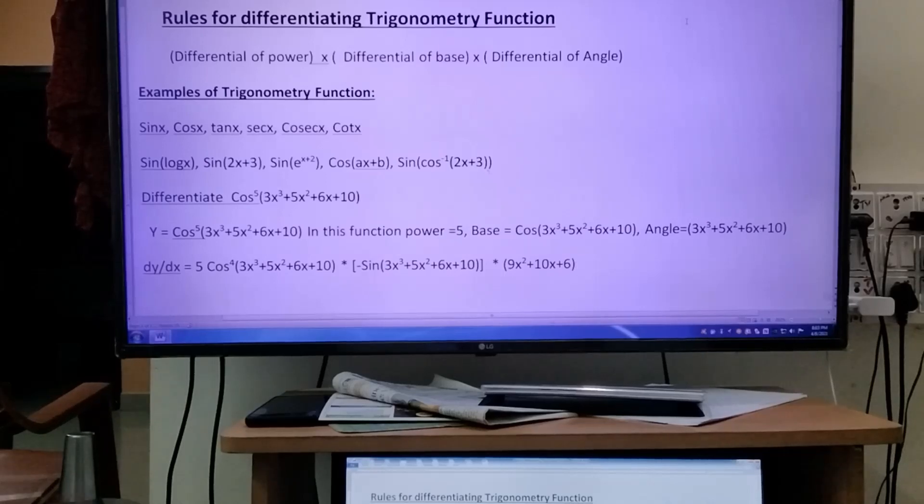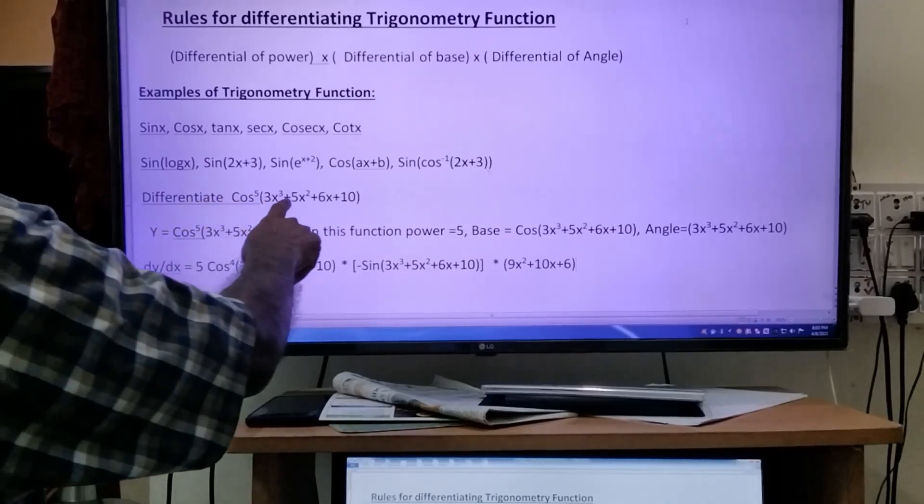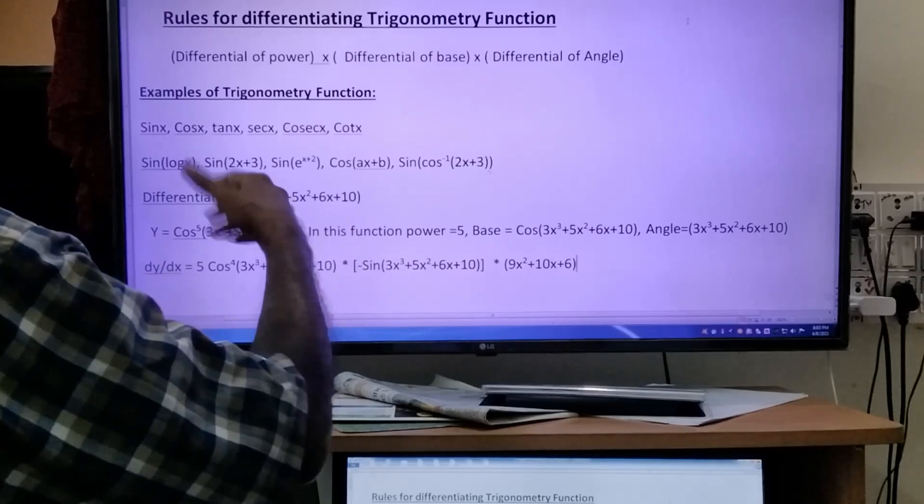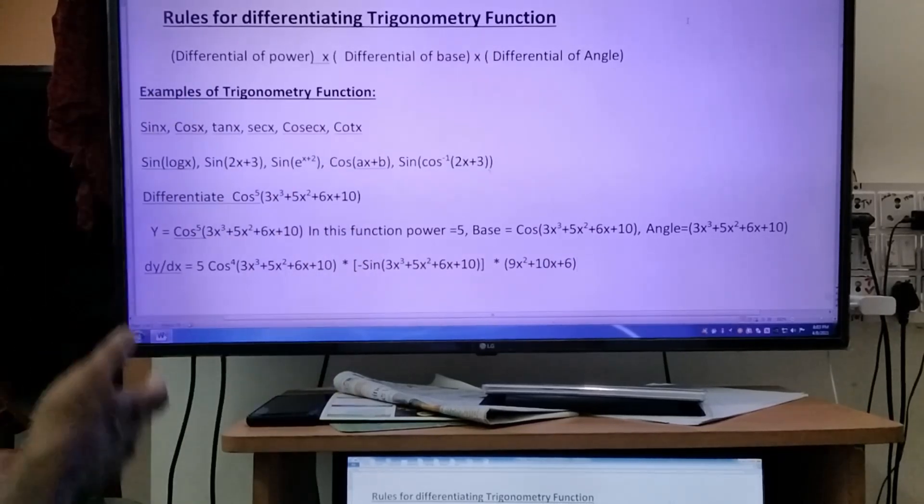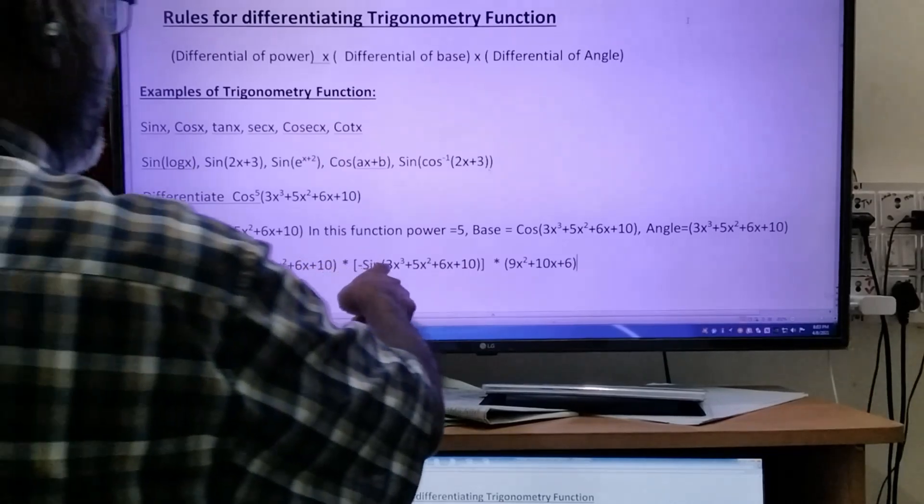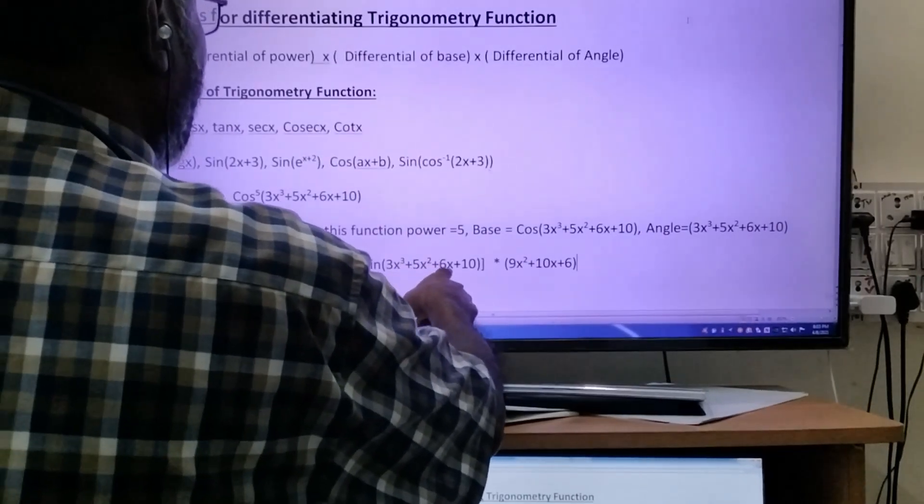What is the differential of the base? Cos(3x³ + 5x² + 6x + 10) is the base. What is the rule? The derivative of cos x is minus sin x. That's why I applied minus sin(3x³ + 5x² + 6x + 10) into the picture.